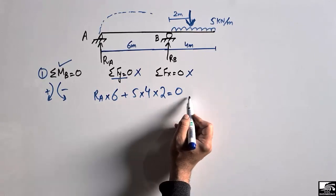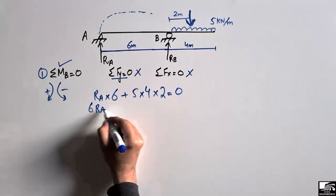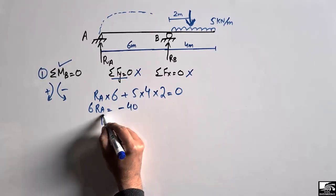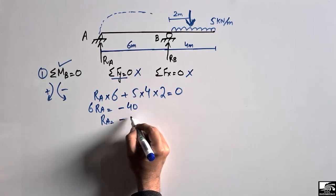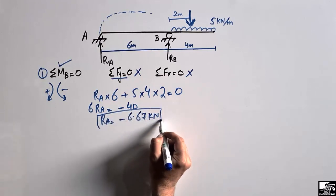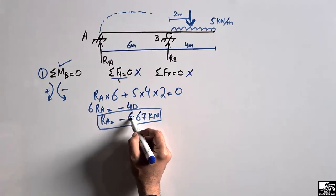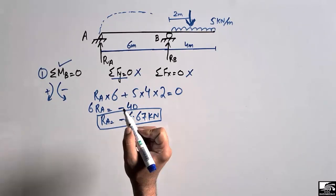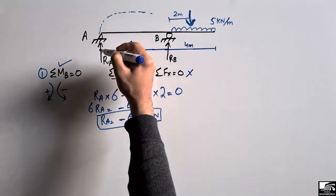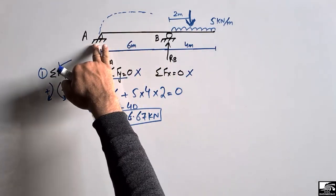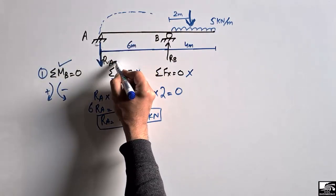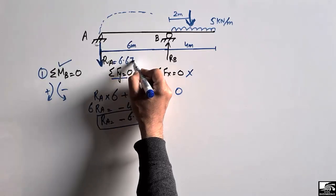Solving: 6·RA + 5 × 4 × 2 = 0, so 6·RA = −40, giving RA = −6.67 kN. The negative value indicates that RA does not act upward as assumed, but instead acts downward. We revise the direction of RA to downward, so RA = −6.67 kN.